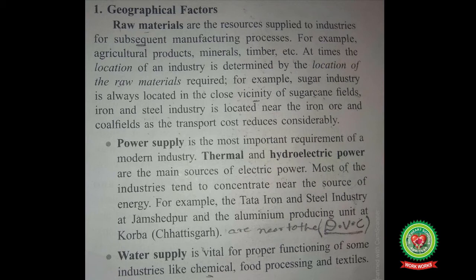The second point is power supply. Power supply is the most important requirement of modern industry. Thermal and hydroelectric power — thermal meaning power generated by coal and hydroelectric meaning power generated from water — are the main sources of electric power. Most industries tend to concentrate near sources of energy. For example, the Tata Iron and Steel industry at Jamshedpur and an aluminum-producing unit at Korba, Chhattisgarh, are situated near the Damodar Valley project, known as DVC, which provides hydroelectricity plus water and other requirements.